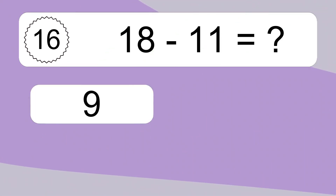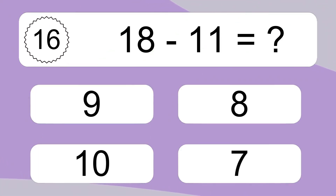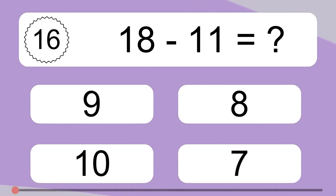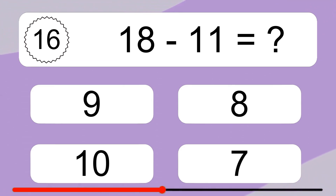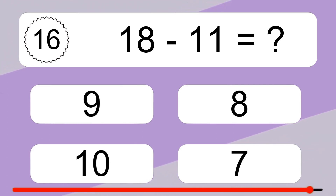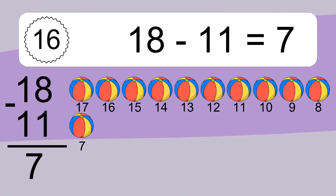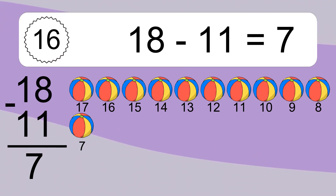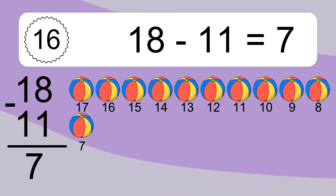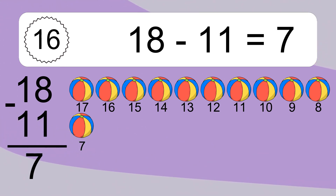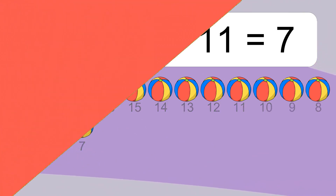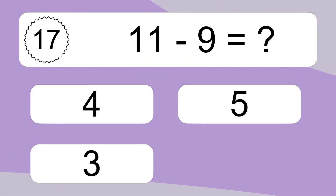18 minus 11 equals what? 18 minus 11 equals 7. Let's count it: 17, 16, 15, 14, 13, 12, 11, 10, 9, 8, 7.